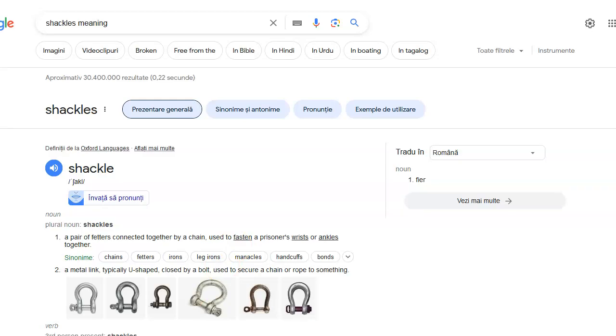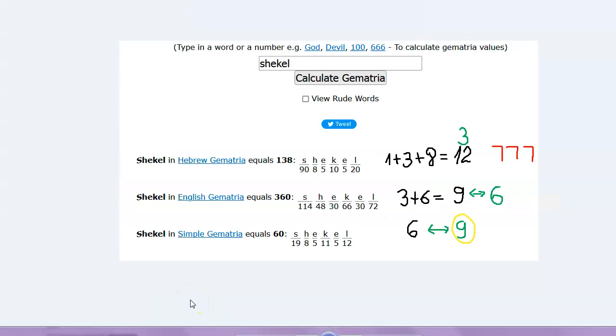Anyway, so I did a gematria analysis for shackle and shackles. I used the number code. My source is Dave J. So from Hebrew, English, and Simple, you have the results and I reduced the results by adding the numbers.